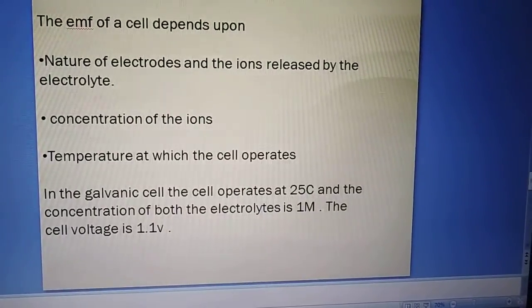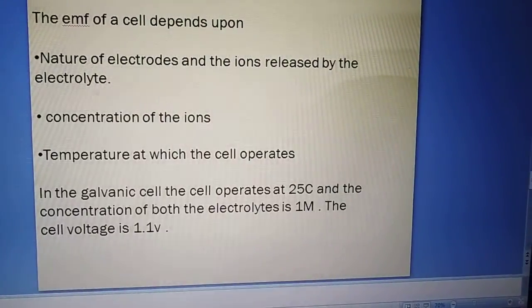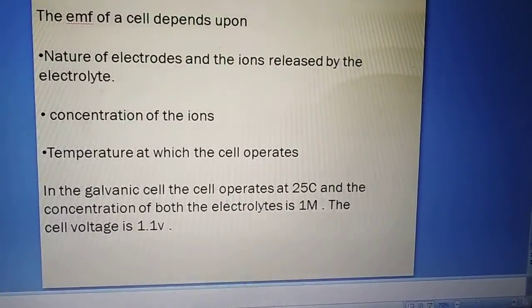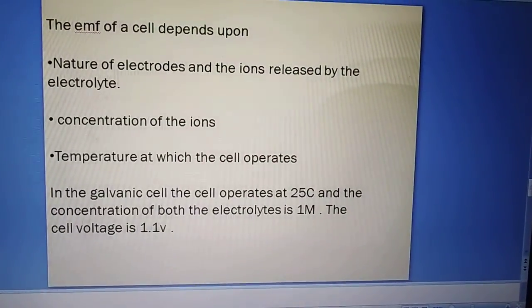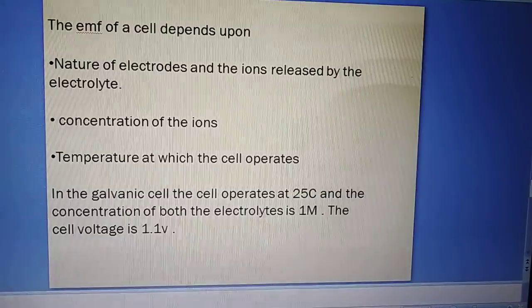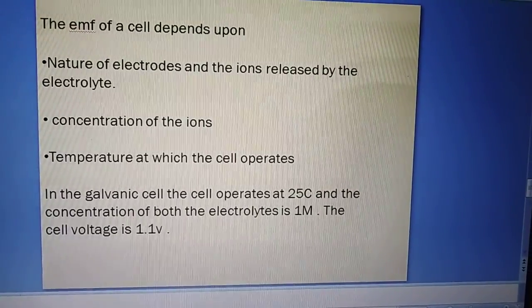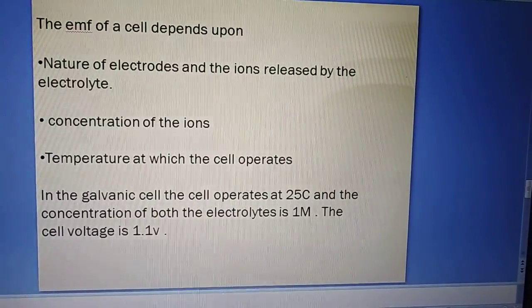In the galvanic cell, the cell operates at 25 degree centigrade and the concentration of both the electrolytes is 1 molar. The cell voltage is 1.1 volt for galvanic cell. Thank you.